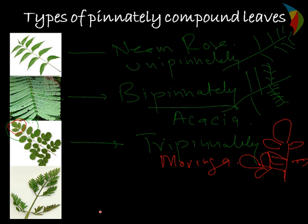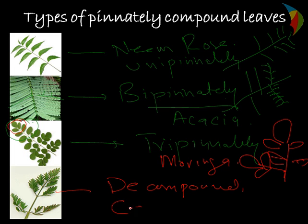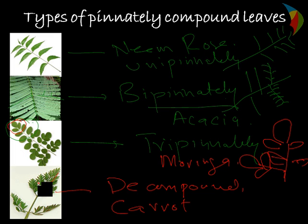The fourth type is decompound leaves. Decompound leaves are mostly found in carrot. Here in the picture you can see there are a lot of small leaves which have a partition, coming out on both sides of the main midrib. So this forms the decompound leaves.